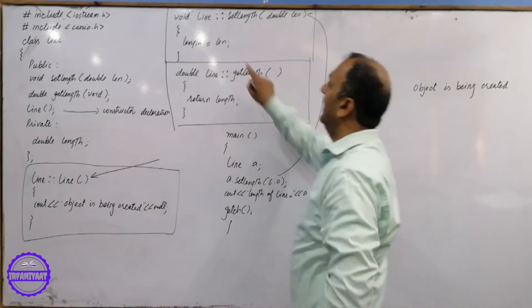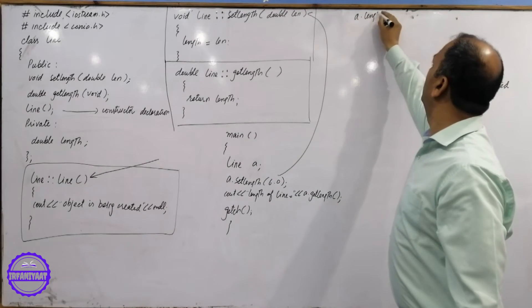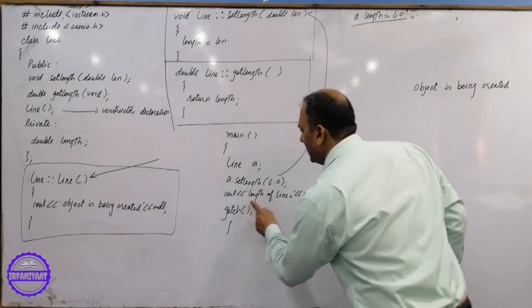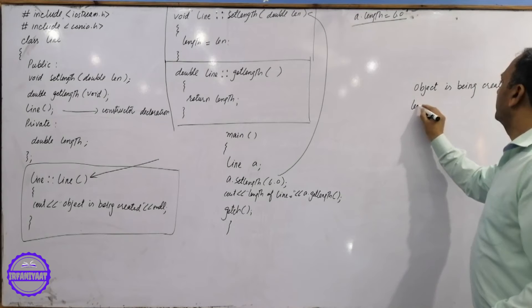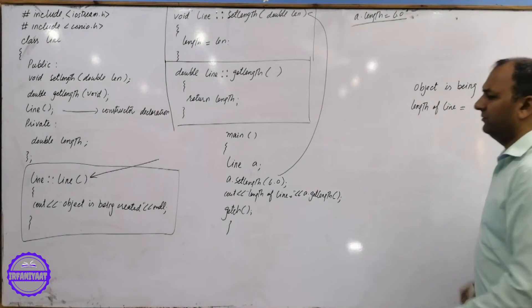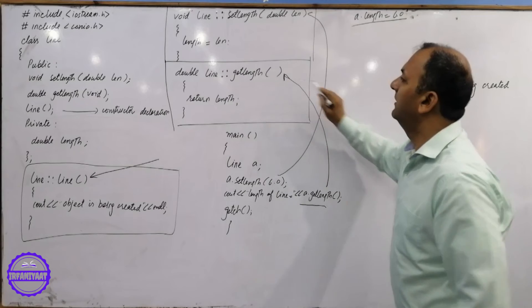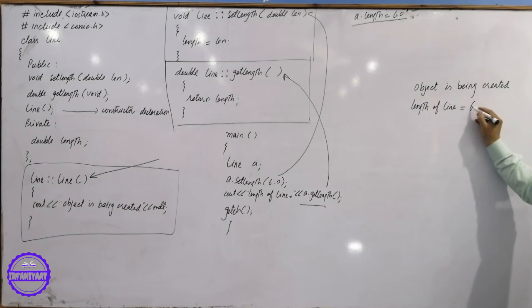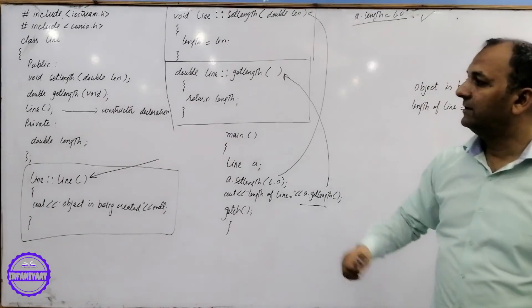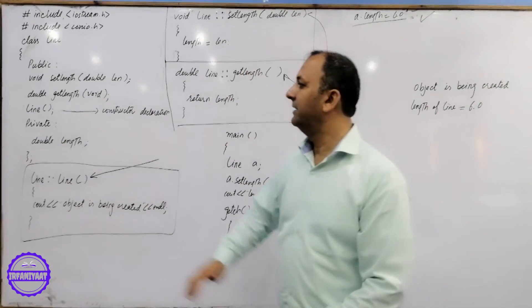The cout prints 'object is being created'. Then we call set length. The cout prints the object value. As it is written, length of line equals a dot get length — this calls the get length function, control goes there, return length, length is returned — 6 points.